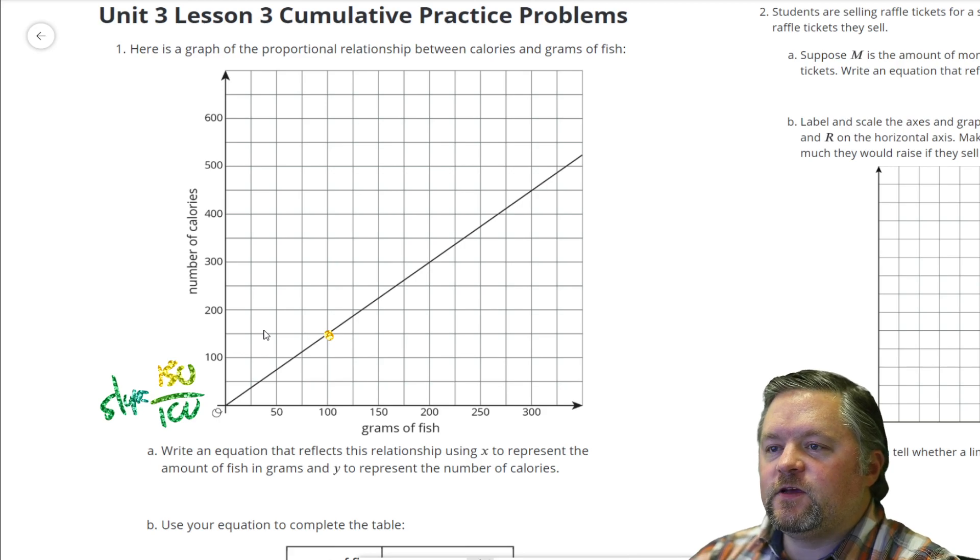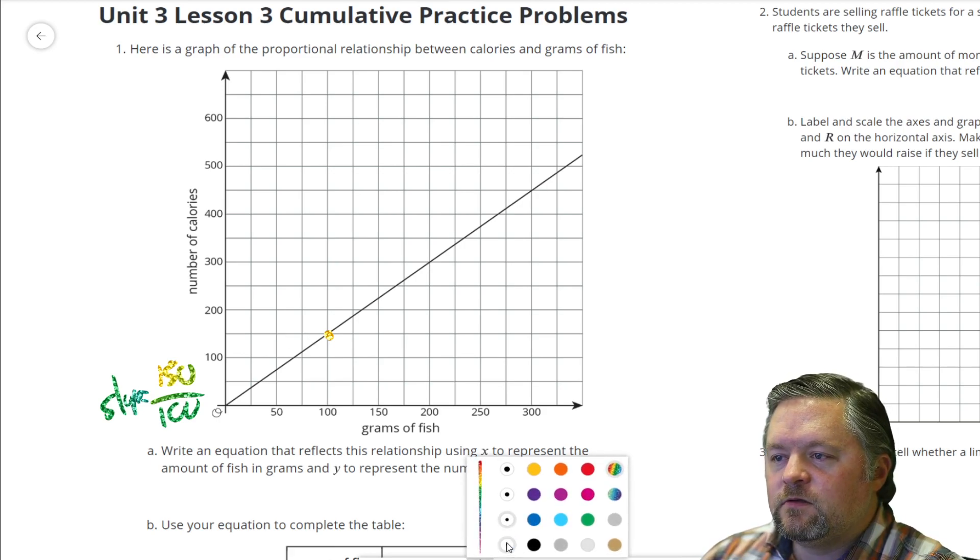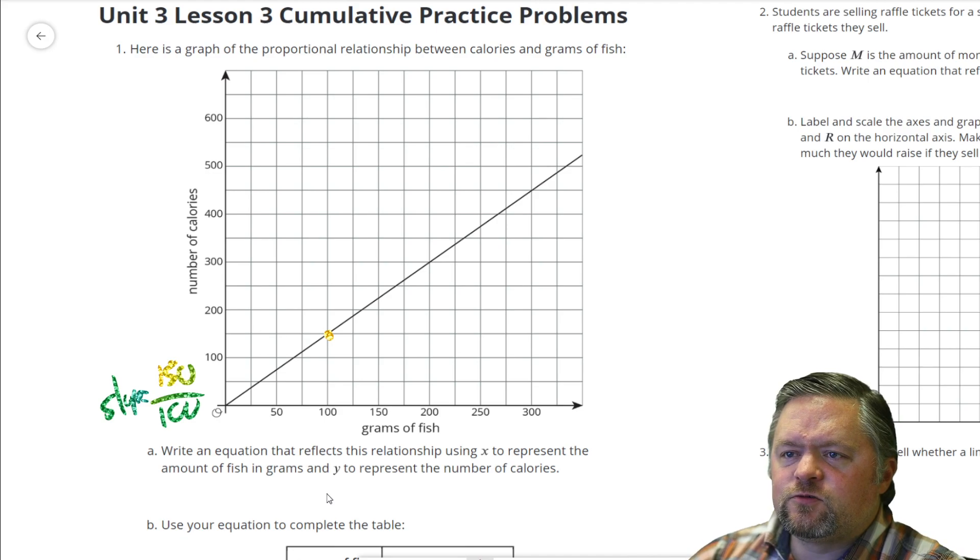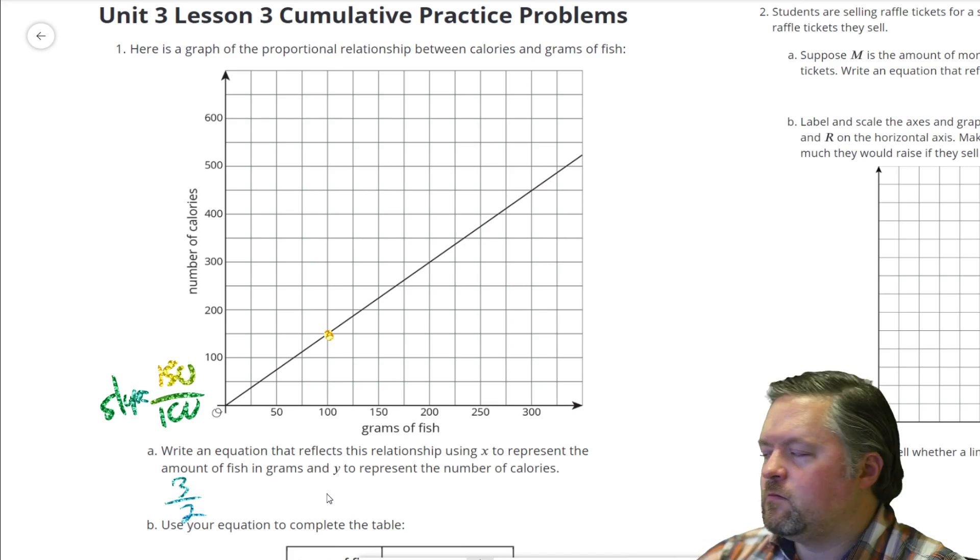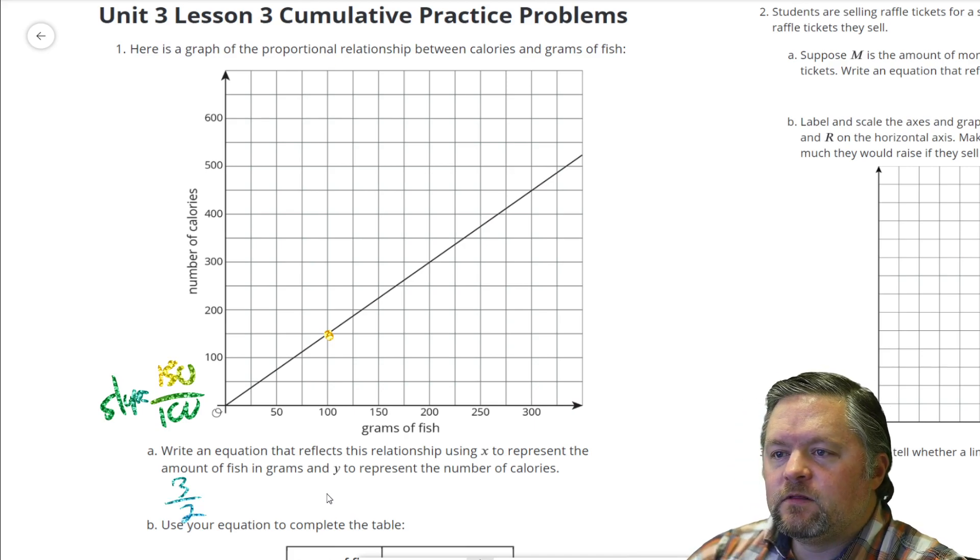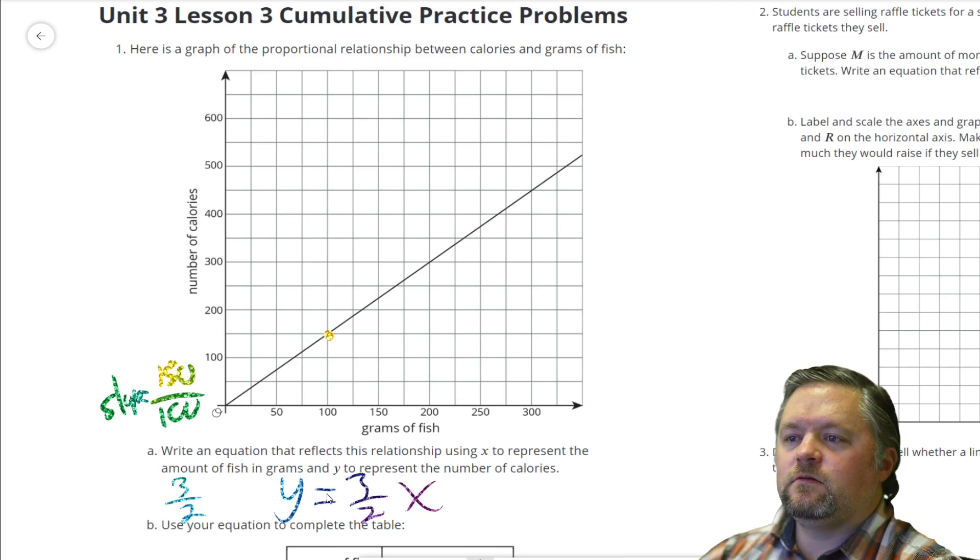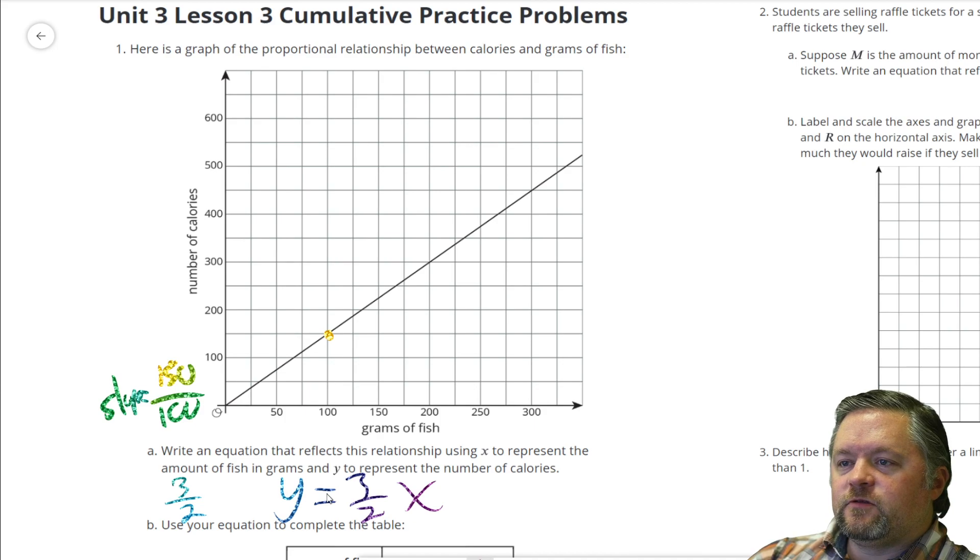So, the slope is 150 over 100, which would be 15 over 10, or 3 over 2. Because it goes through the origin, the equation is nice and simple: y equals 3 over 2x, or y equals 1.5x. If x is 100, y is 150. If x is 200, y is 300.